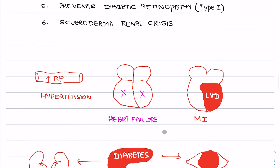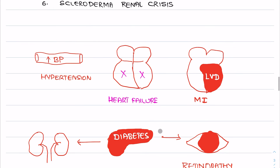This is a diagrammatic representation of the uses of ACE inhibitors: used in hypertension to reduce elevated blood pressure, in heart failure, in left ventricular dysfunction following myocardial infarction, and in diabetic individuals for prevention and treatment of diabetic nephropathy as well as diabetic retinopathy.